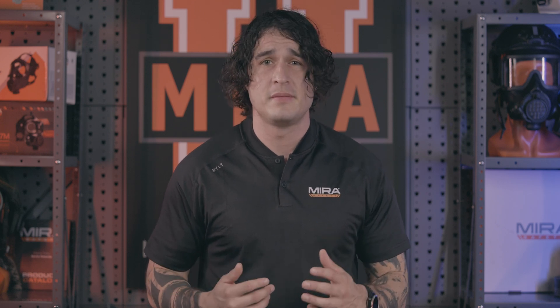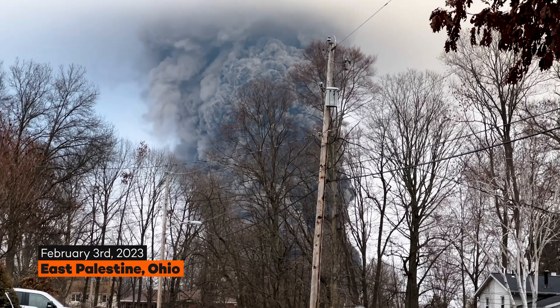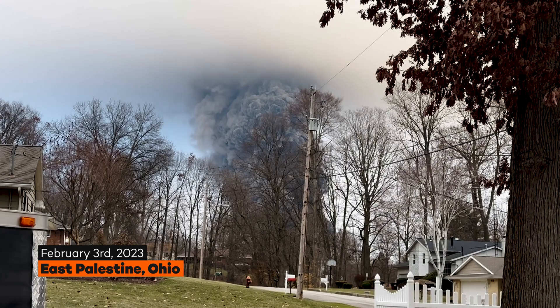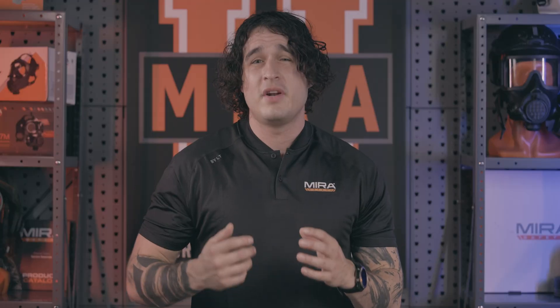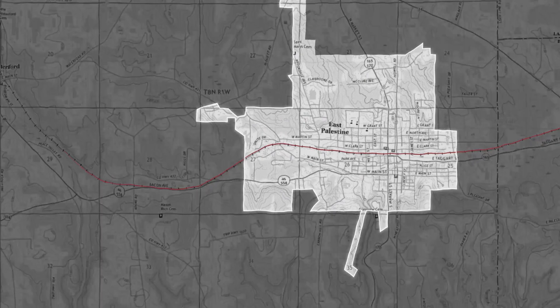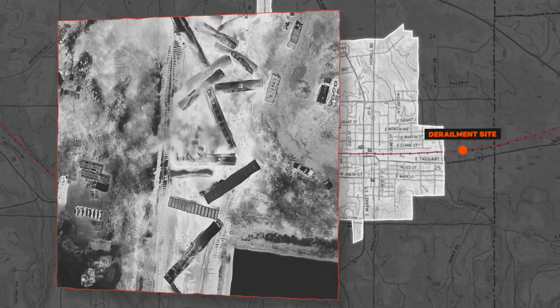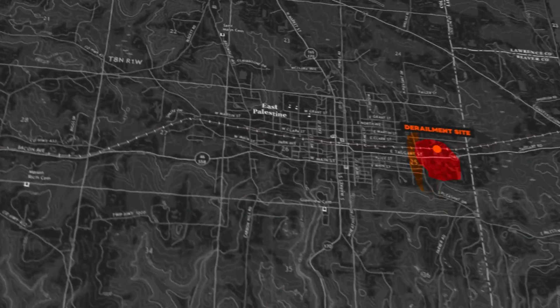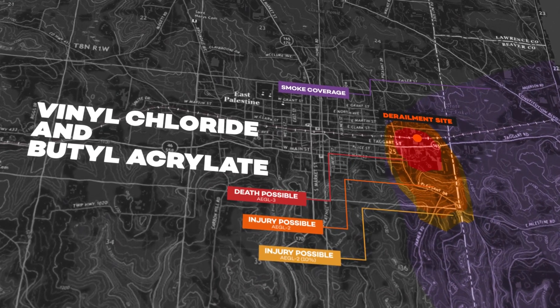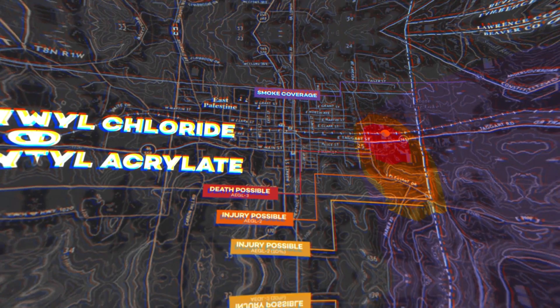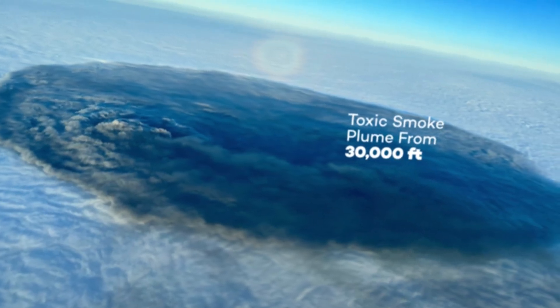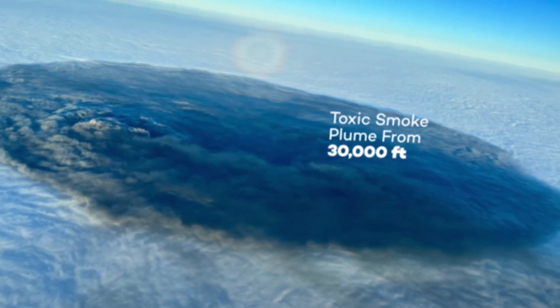Let's talk about a few real-world cases where people were exposed to chemical agents. To start off, we have to talk about the Ohio train derailment, which occurred in February of 2023. 4,700 residents in East Palestine, Ohio, were affected by a train derailment. The accident released vinyl chloride and butyl acrylate into the air — a reminder that things like this can happen in our very own backyards.